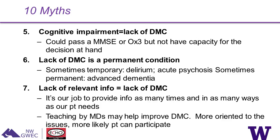Myth seven: lack of relevant information is the same as lack of capacity. It's the clinician's responsibility to provide information repeatedly, identify areas of misunderstanding, and deliver information in the way the patient can best understand it. Misunderstandings are common even among people with full capacity. Importantly, the care and time dedicated to the capacity assessment process itself can actually improve capacity for certain decisions — so there are multiple benefits to devoting time to this.